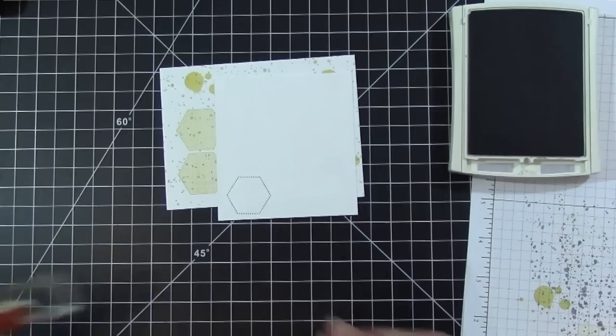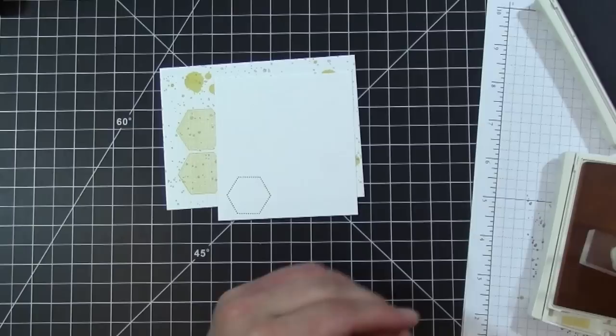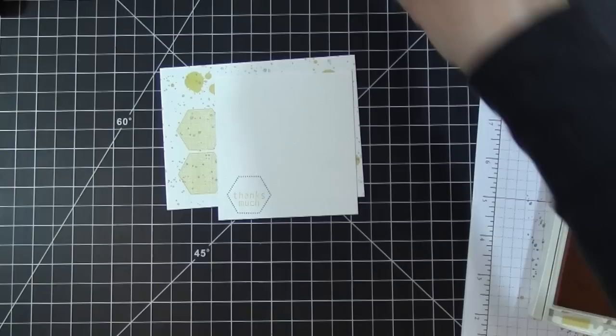I'll use So Saffron and I'm going to stamp that right in the center of that stitched one. I'm going to slide this to the side.